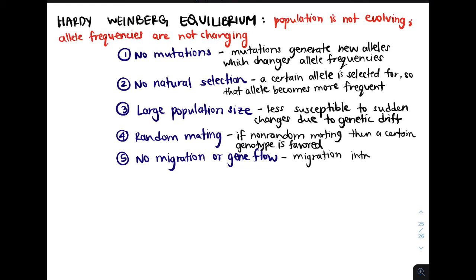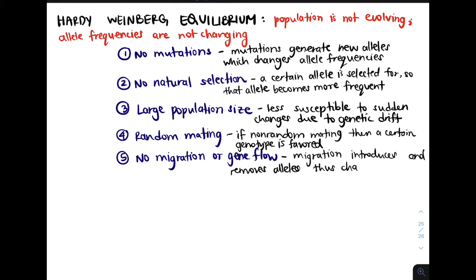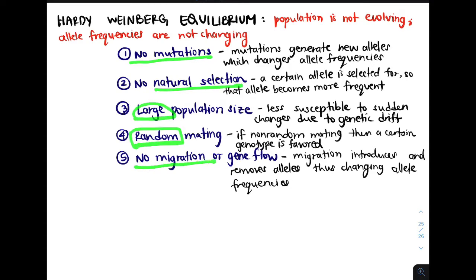No migration is important because if we do have migration, then alleles are either introduced or removed, which changes allele frequencies. So the five key assumptions are: no mutations, no natural selection, large population size, random mating, and no migration.